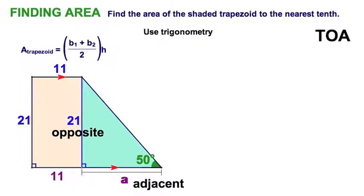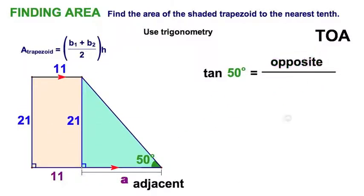So now, let me set that up. I know I've got a tangent, in this case I'll take the 50 degrees, and that's going to be equal to the opposite over the adjacent. Now let's do a little substitution. I'm going to replace the opposite with the number 21, and then I'm going to replace the adjacent with the letter A, so 21 over A.